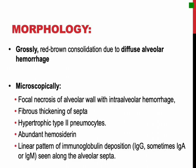Grossly, the lung shows areas of red-brown consolidation due to diffuse alveolar hemorrhage. Microscopically, focal necrosis of the alveolar walls associated with intra-alveolar hemorrhage, fibrous thickening of the septa, and hypertrophic type 2 pneumocytes are seen. Abundant hemosiderin can be seen due to earlier episodes of hemorrhage. The alveolar septa show the characteristic linear pattern of immunoglobulin deposition, usually IgG, sometimes IgA or IgM, which is the hallmark diagnostic finding in renal biopsy specimens.